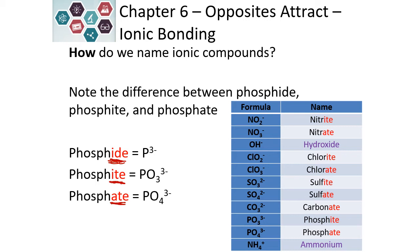There are a couple of exceptions to this. One of those exceptions is hydroxide — even though it's a polyatomic ion, it ends in -ide. Another exception is ammonium, and the reason for this exception is because this is a positively charged polyatomic ion. So these names are just a little bit different. All of the rest end in -ide or -ate.